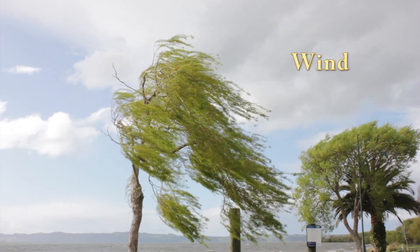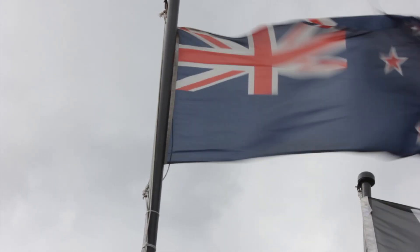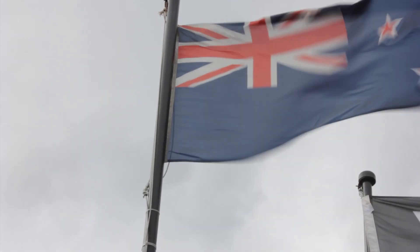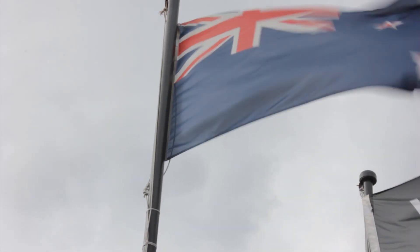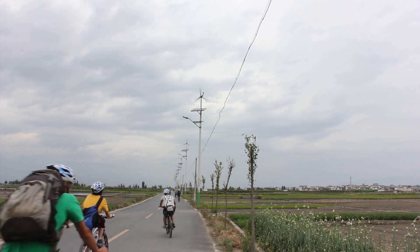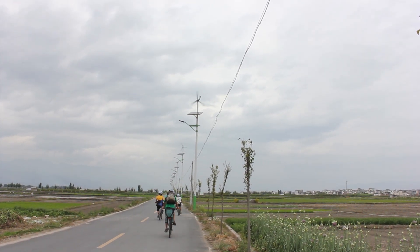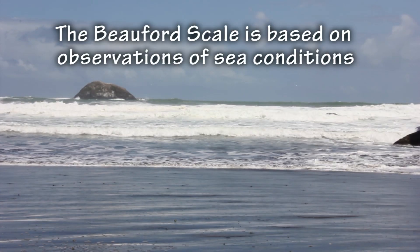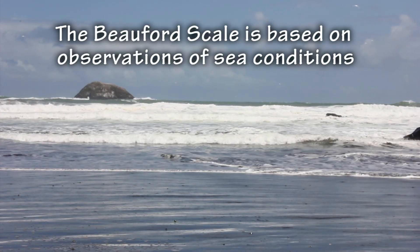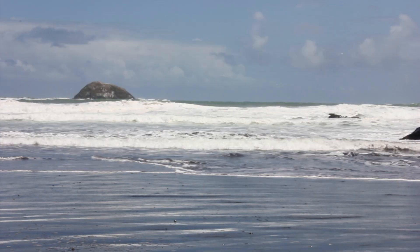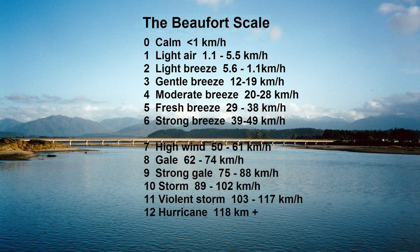Wind is the movement of air. Wind is caused by differences in air pressure and moves from areas of high pressure to areas of low pressure. The force of wind is often measured in terms of wind speed. One commonly used scale is the Beaufort scale, which was based on observations of sea conditions. A zero on this scale, or calm air, is wind speeds of less than 1 km per hour. At 12 on the scale, we have hurricanes, with wind speeds in excess of 120 km per hour.